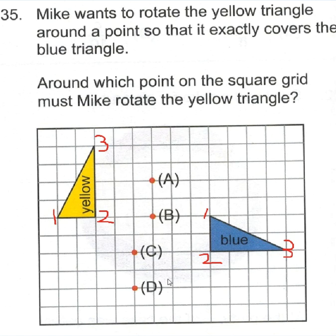So D is the correct answer because it's the only fixed point where all 3 vertices of the 2 triangles are the exact same distance away from the fixed point. I hope that makes sense to you, so remember that's an easy way to do it. Label the points, measure the distance. You would have quickly seen it's not A, B or C.